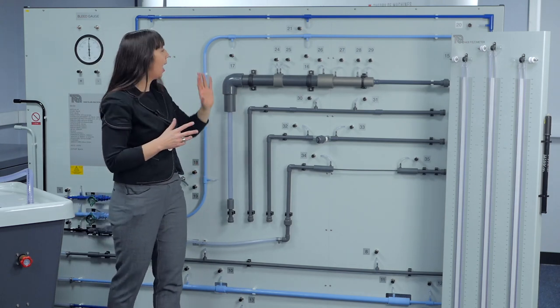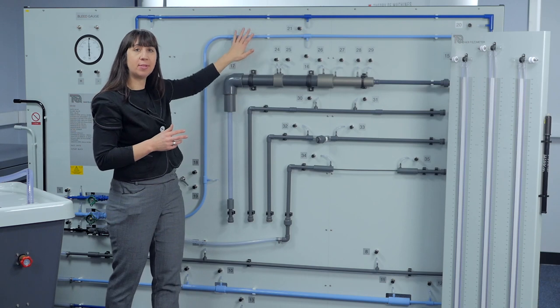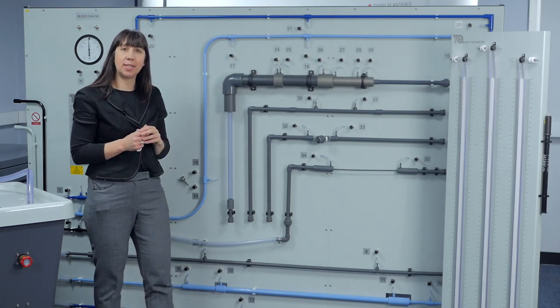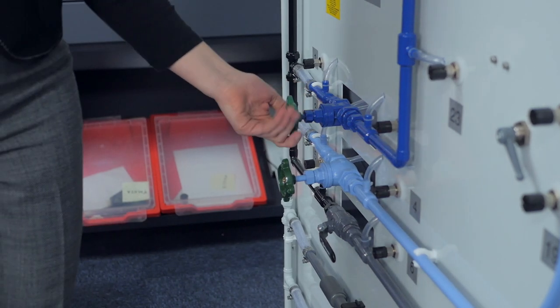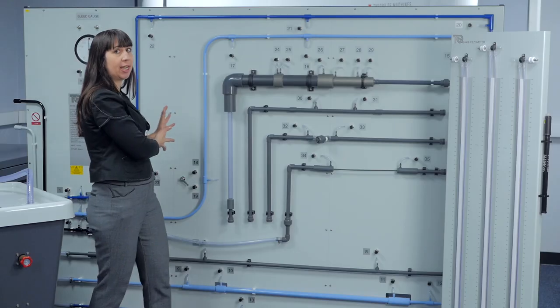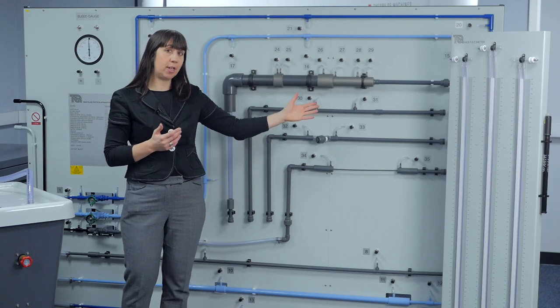The apparatus has three colour coded circuits with instruments, pipes and pipe fittings, including a different valve on each circuit. The valves are positioned downstream of each circuit to avoid upstream turbulence.